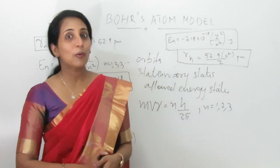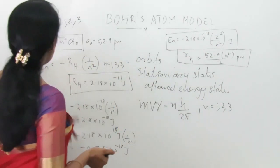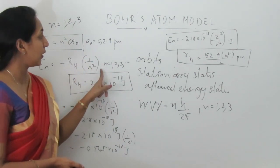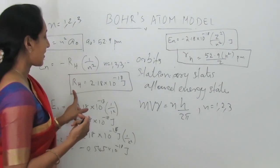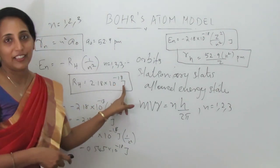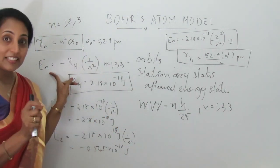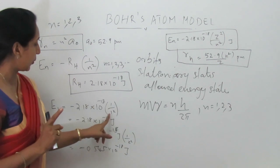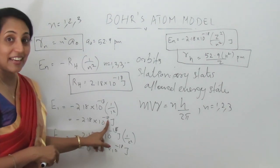According to Bohr's theory, we can also calculate the energy of the nth orbit by the expression En = −RH × (1/n²), where n = 1, 2, 3 for different orbits, and RH is a constant equal to 2.18 × 10⁻¹⁸ J. Substituting n = 1, we get E1 = −2.18 × 10⁻¹⁸ J.